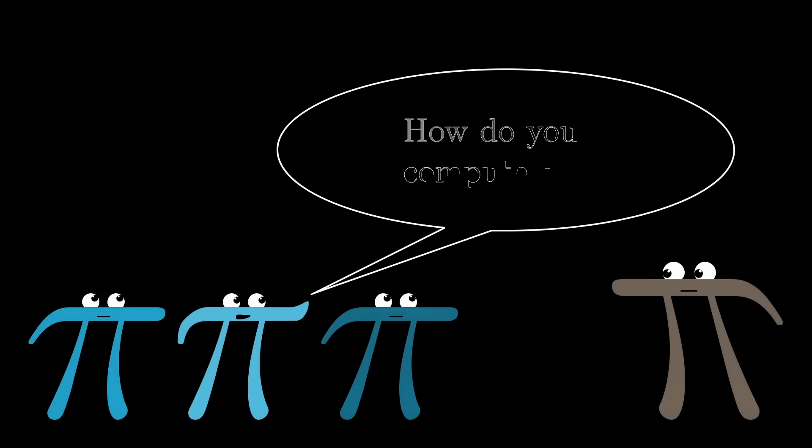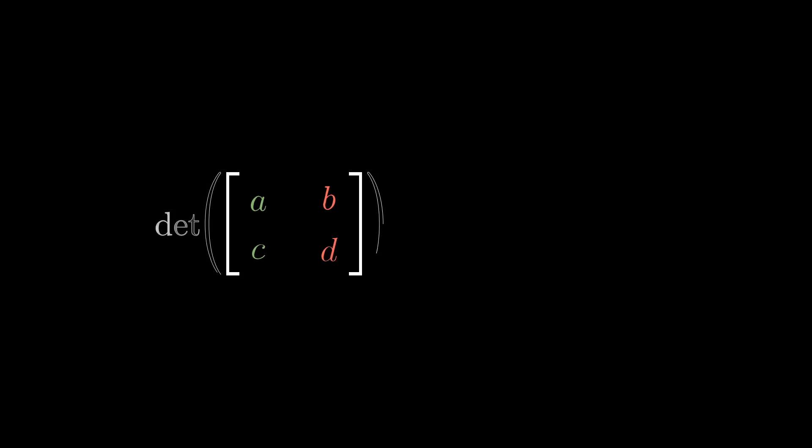So, if you haven't seen it before, you're probably wondering by now, how do you actually compute the determinant? For a 2x2 matrix with entries A, B, C, D, the formula is A times D minus B times C.